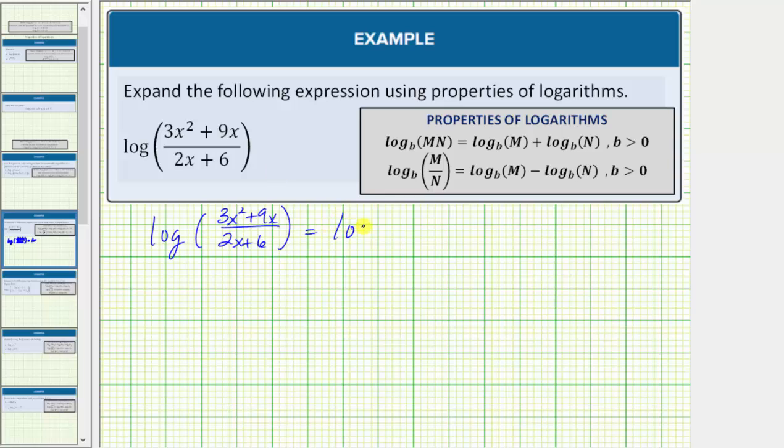So this is equal to log of the quantity. To factor three x squared plus nine x, we factor out the greatest common factor of three x. In factored form, we have three x times the quantity x plus three, and now we'll factor two x plus six by factoring out the greatest common factor of two. The quantity two x plus six in factored form is two times the quantity x plus three.